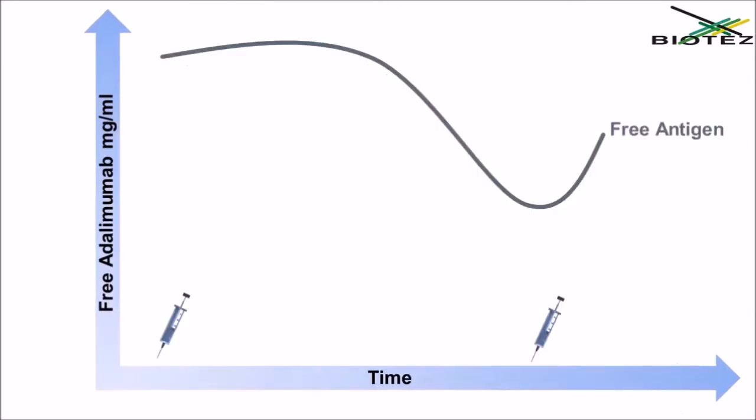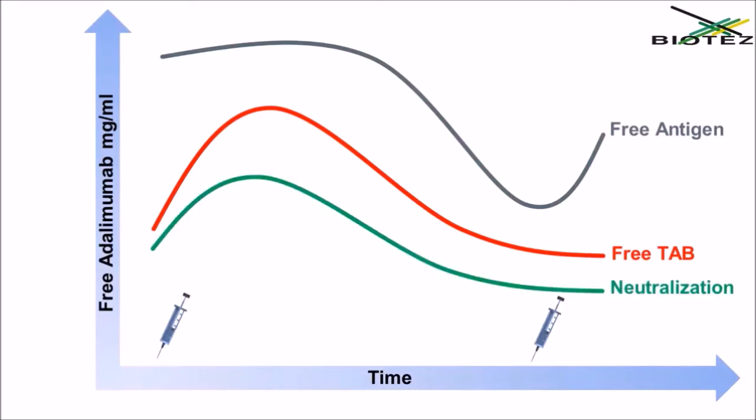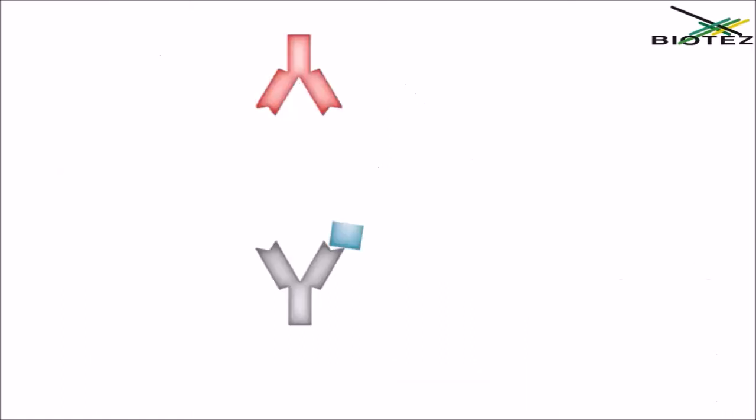The recovery ELISA measures the concentration of the free antigen and the concentration of the free therapeutic antibody simultaneously in one assay. From these two measurements, the neutralization rate for each patient can be calculated.